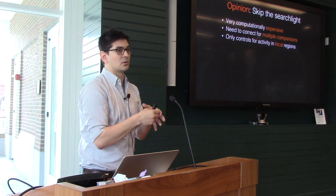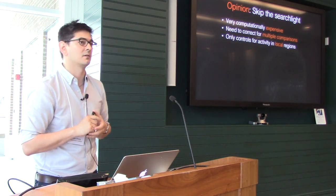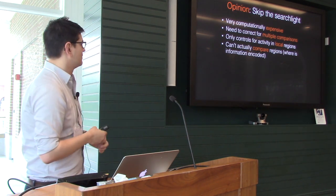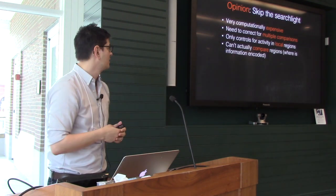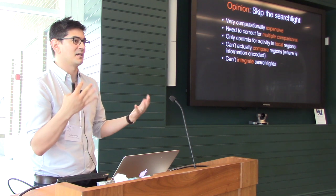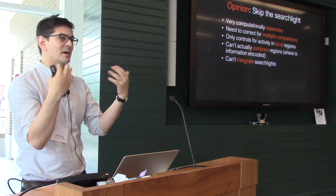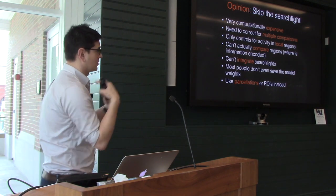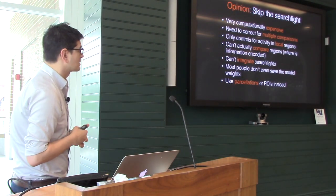Another problem: the searchlight only controls for activation in local regions within the searchlight window, whereas a whole-brain or larger ROI approach controls for activation across all other regions. Also — and I think this is a logical fallacy — a searchlight can't actually compare which regions are better; you'd need to control for the others to do that, which means you actually want a whole-brain approach. Critically, most people don't even save their searchlight model weights, so you can't integrate overlapping searchlights or arbitrate between them. What I advocate: start with whole-brain models, or use parcellation schemes where you can tune granularity, or pick specific ROIs.